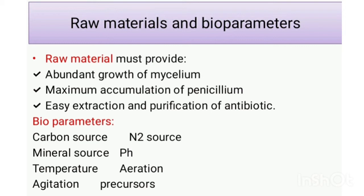Lactose is the most satisfactory carbon compound used in the production process. Other carbon sources like glucose and sucrose can also be used. For the nitrogen source, ammonium sulphate, ammonium lactate, or ammonium acetate, and corn steep liquor provide the nitrogen source.